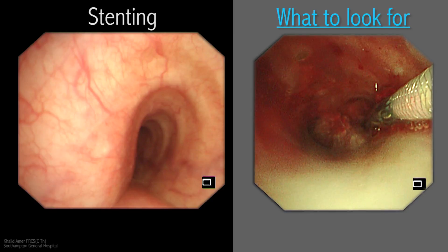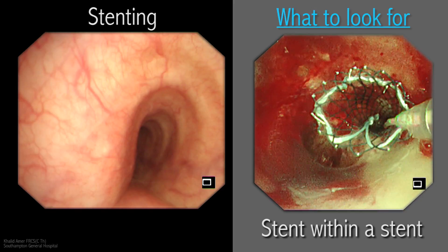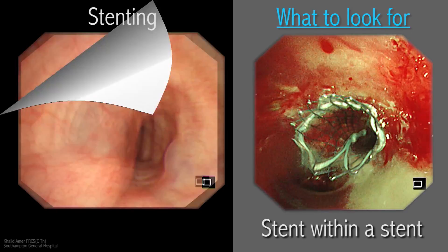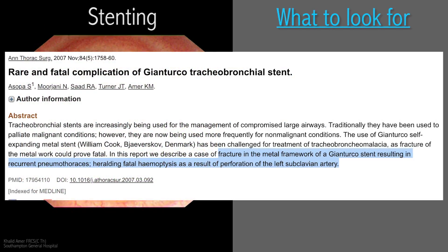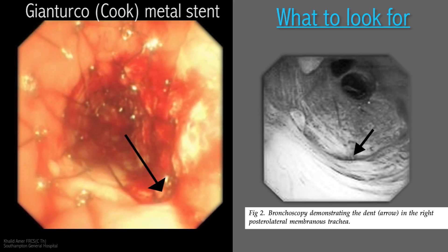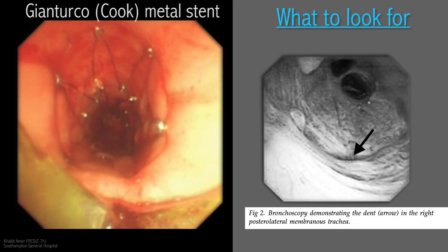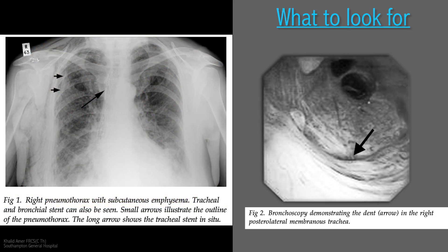It is possible sometimes to launch a second stent of a different type through a previously inserted stent, as shown in this clip. It is worthwhile mentioning that our early stenting experience at Southampton General Hospital involved the Gianturco metal stent, made by William Cook, which was popular at that time. We no longer use them. We have previously reported fracture of the metal framework of a Gianturco stent resulting in recurrent pneumothoraces, heralding fatal haemoptysis as a result of perforation of the left subclavian artery.